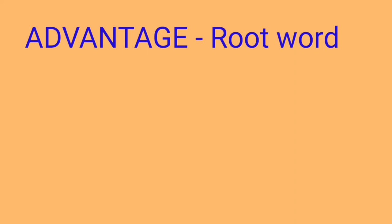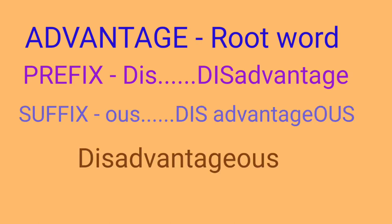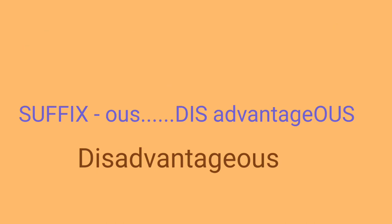The root is a key to build new words. For example, take the word 'advantage.' If we add the prefix 'dis,' it forms 'disadvantage' — the opposite of the root word. And if we then add the suffix '-ous' to 'disadvantage,' we get a new word: 'disadvantageous.'